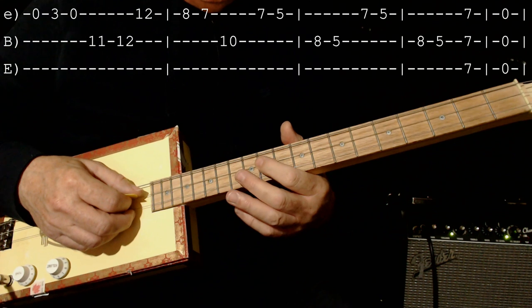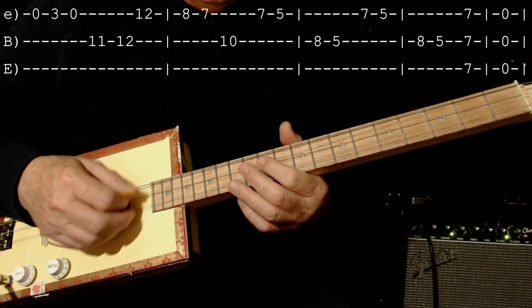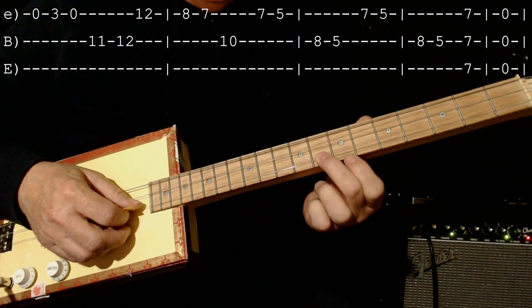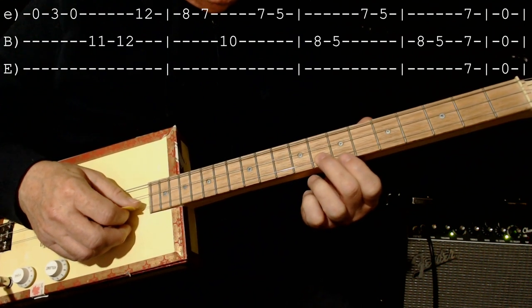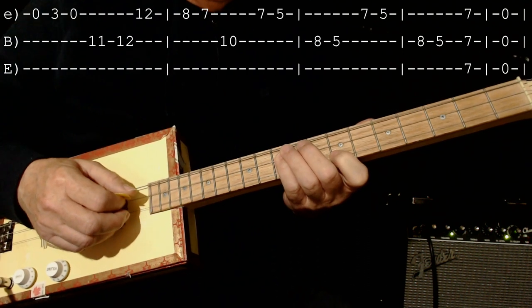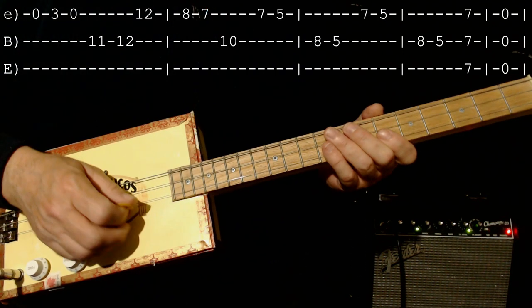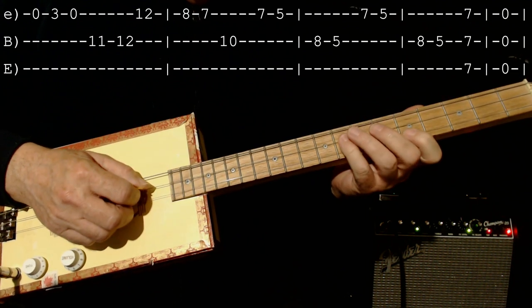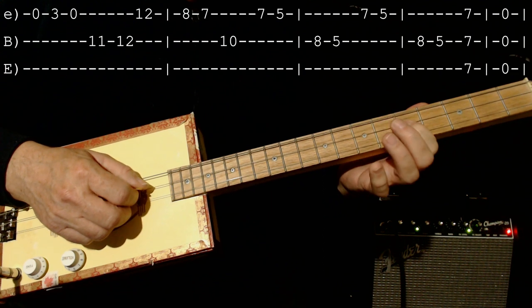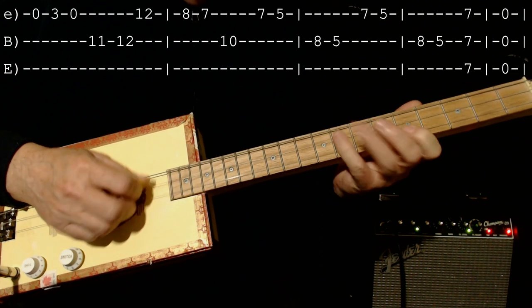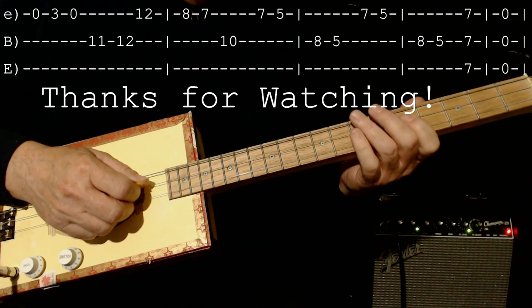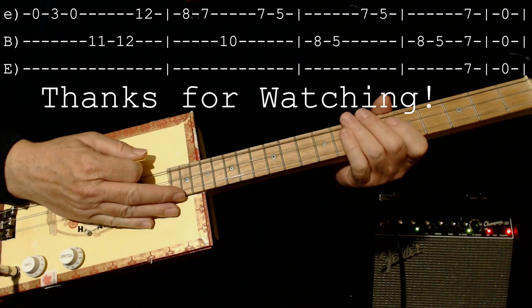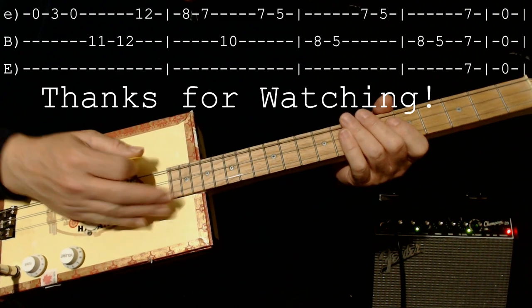That was zero three zero eleven twelve twelve and then back to the eight seven ten ten being on the middle to end the song you play this lick twice seven five on the first string eight and then five on the middle string and then the last two chords are seven and zero and that's it have a great day bye you.